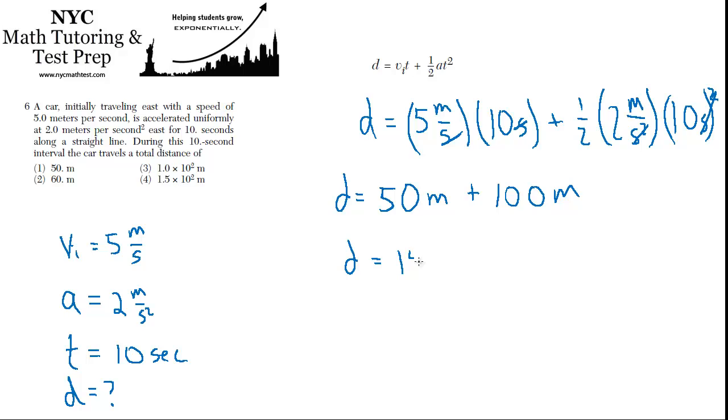And D equals 150 meters. That's how far I would travel in the 10 seconds. And they've given it to us in scientific notation, so that's the same as 1.5 times 10 to the second, right? Because 10 to the second is 100, so one-and-a-half times 100 is 150. 4 is the answer.